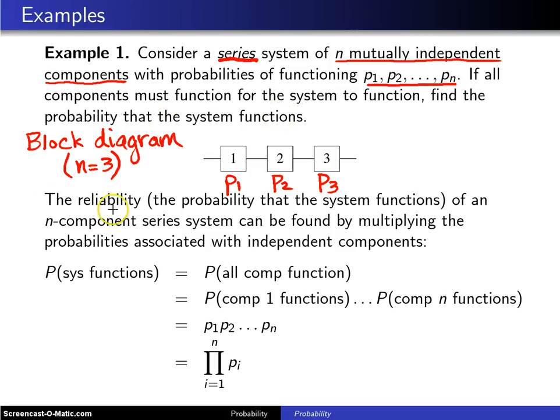The reliability of the system, which is the probability that the system functions, in this N component series system can be found by multiplying the probabilities associated with the independent components.